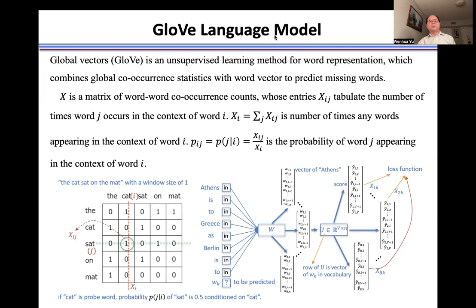Suppose X is a matrix of word-word co-occurrence counts. We use the document to generate matrix X, and we use window size 1 to scan the document to fill the matrix.